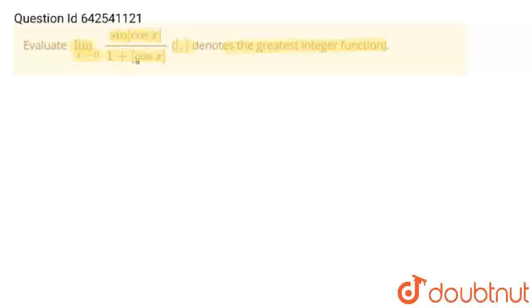In this question, x is with cos x and cos x is under greatest integer function. So I am going to find limit x tends to 0 of greatest integer of cos x.